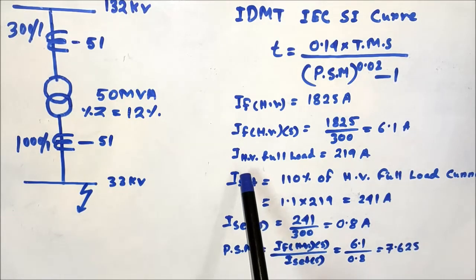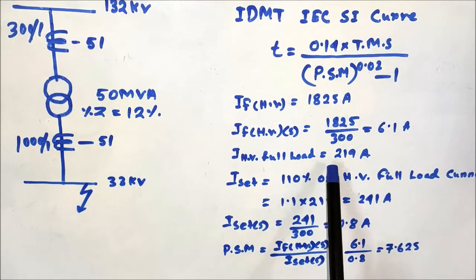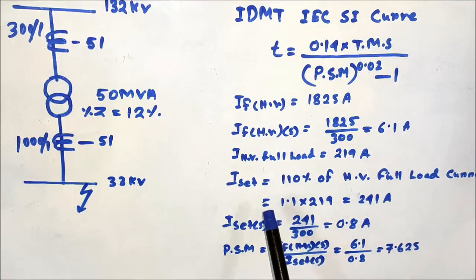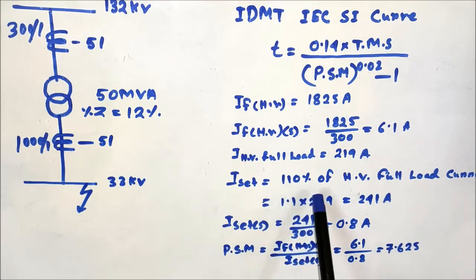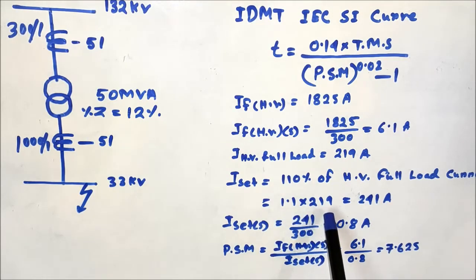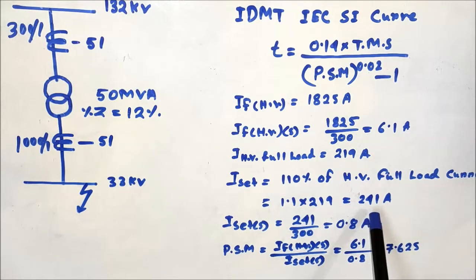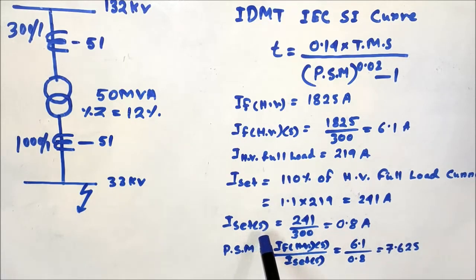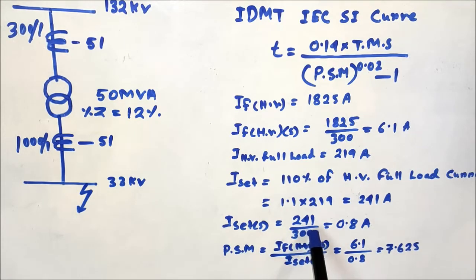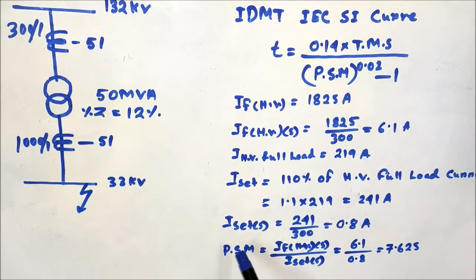The full load current on the HV side is 219 amperes. The current set value is 110% of the HV full load current: 1.1 × 219 = 241 amperes. Reflecting this to the relay secondary by dividing by the CT ratio of 300/1, the I_set secondary is 241 divided by 300, which equals 0.8 amperes. This is the setting for the HV overcurrent relay.